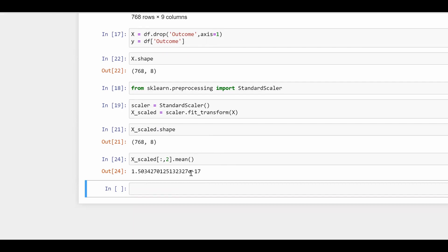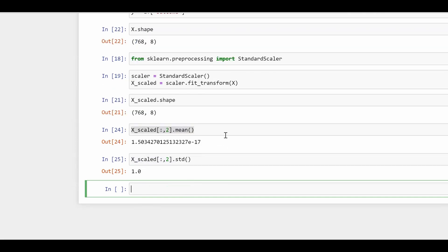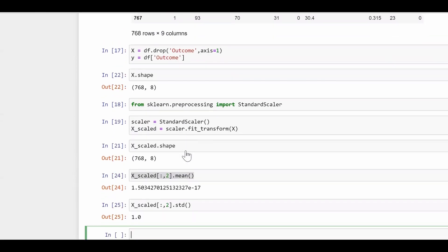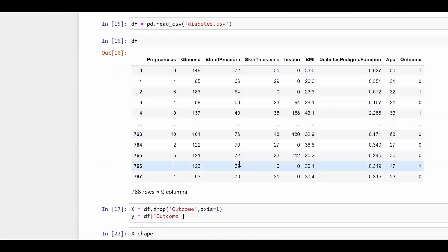So it's giving 1.5 multiplied by 10 raised to the power minus 17, so it's minus 17. Eventually it's going to yield a very small value which is very much closer to zero. And if I just copy the same code and in place of mean if I just say std for standard deviation, it gives a perfect one. So you see that after scaling, how my columns got changed such that its mean became zero and standard deviation became one. That's all guys, thank you.